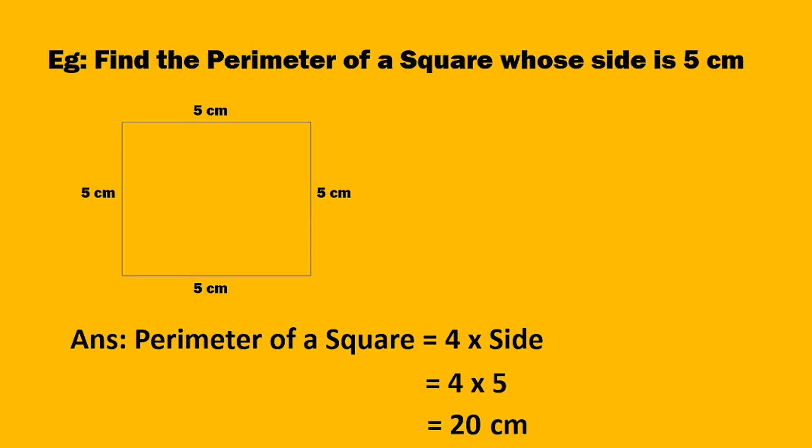The units are centimeters. So the parameter is 20 centimeters. Understood students? I have given only one side because all the sides of the square are equal. Draw a square, name the sides, write the formula — parameter of a square equals four multiply by side — four multiplied by five equals 20 centimeters. We will start with an exercise. Thank you students.